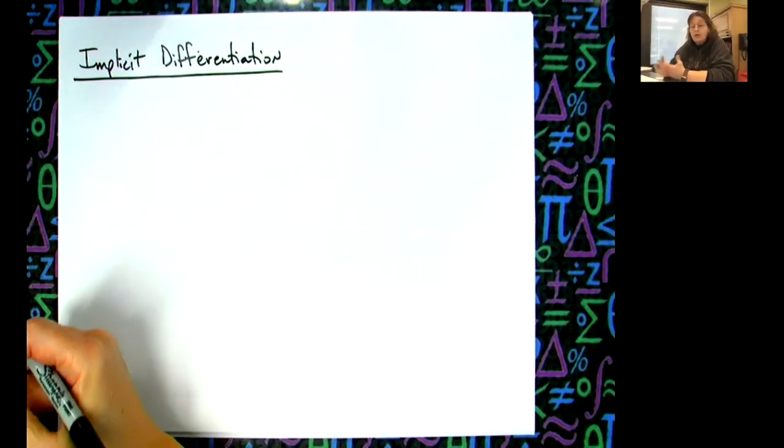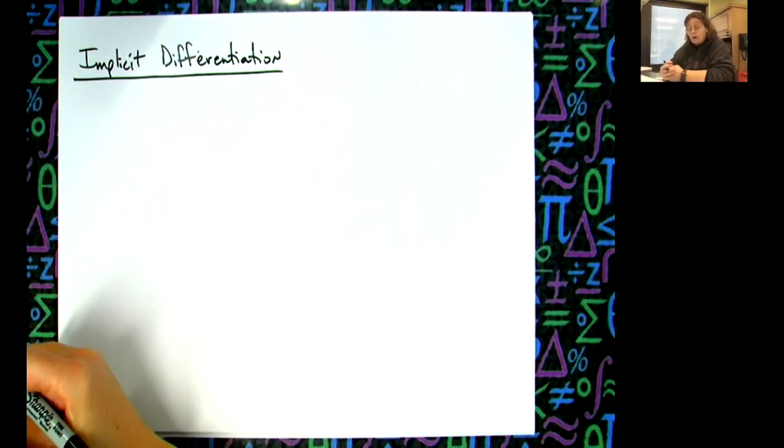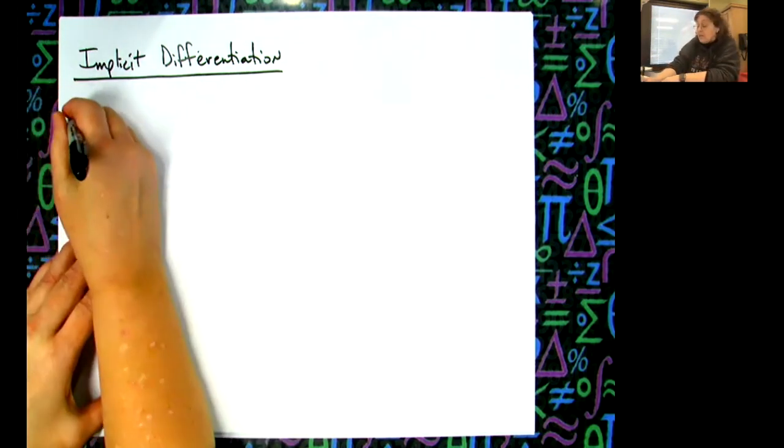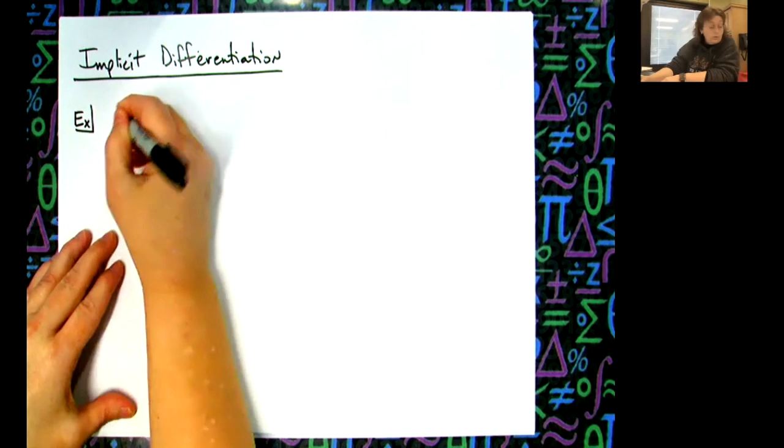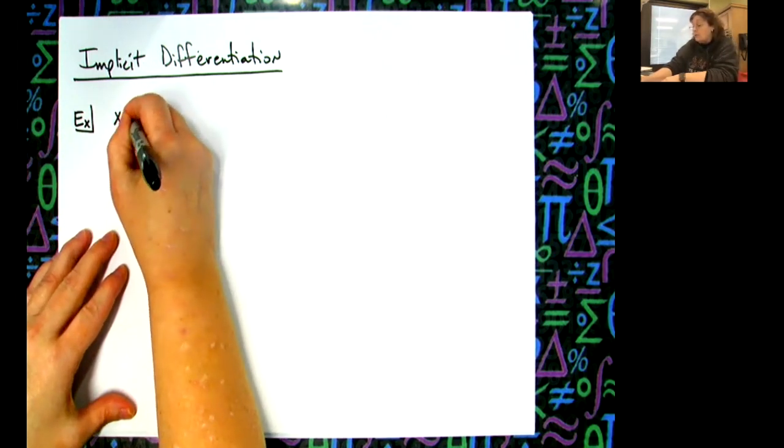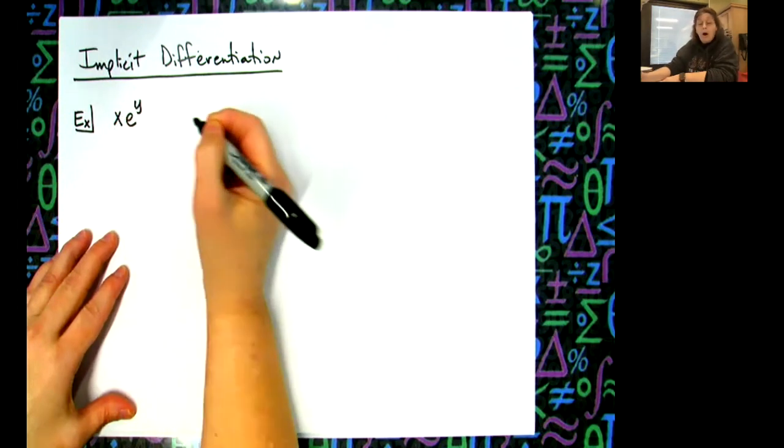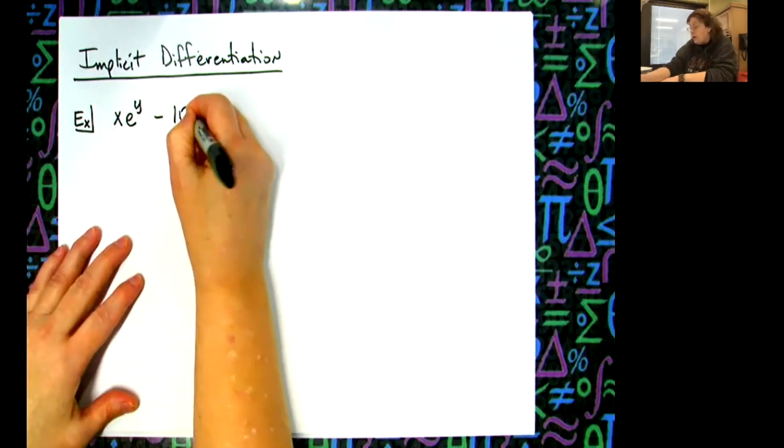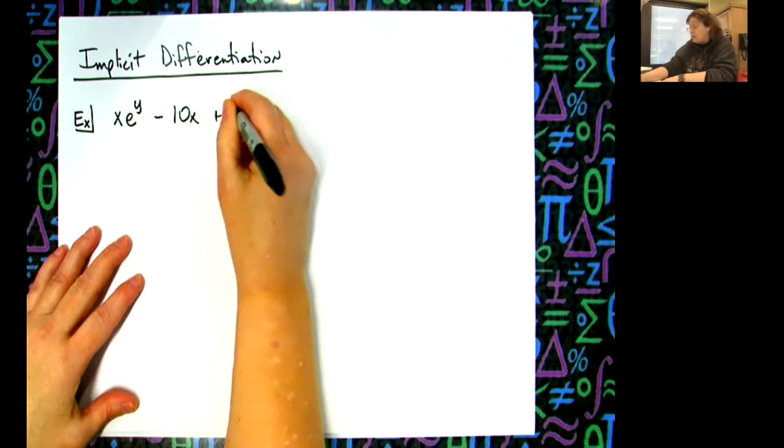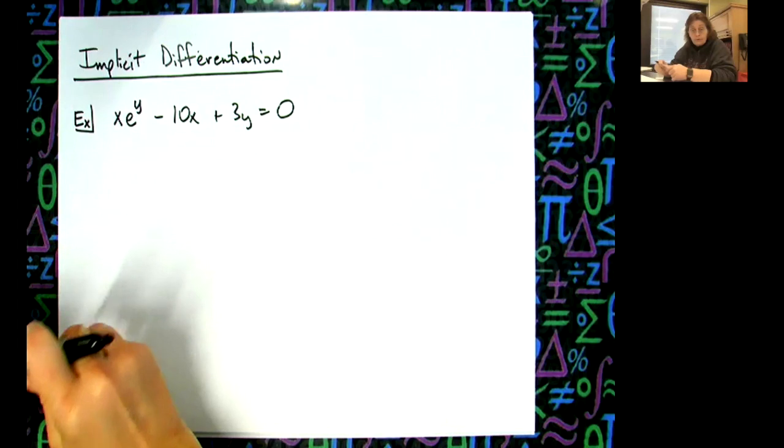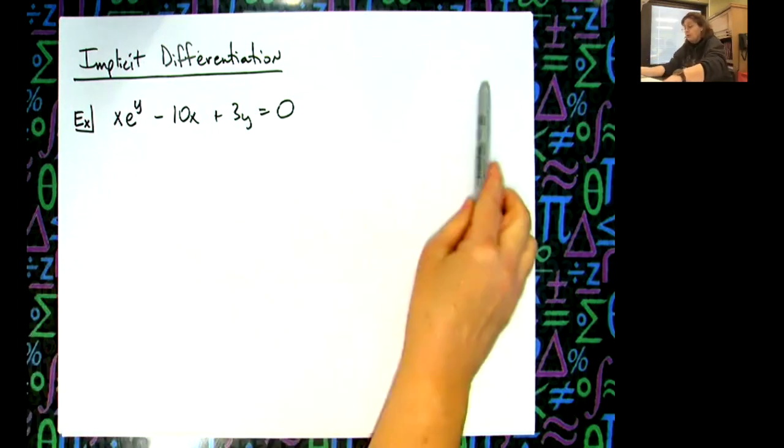You know how to do implicit differentiation, we've been doing it for a long time. Now the only difference is I'm going to throw something in. So let's now do like x times e to the y. I can do that, not a big deal. Minus 10x plus 3y equals zero.